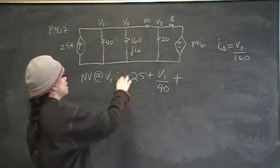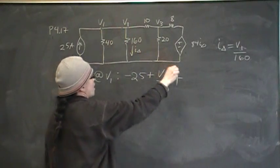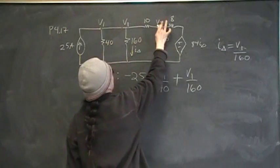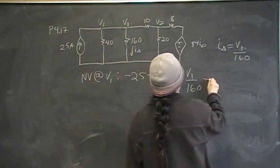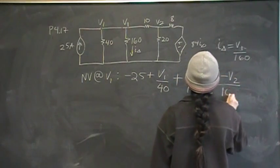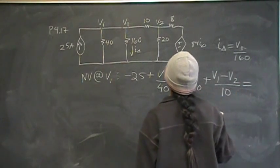So then this is V1 over 160, and I want to change this to V2. And then V1 minus V2 over 10 is equal to 0.